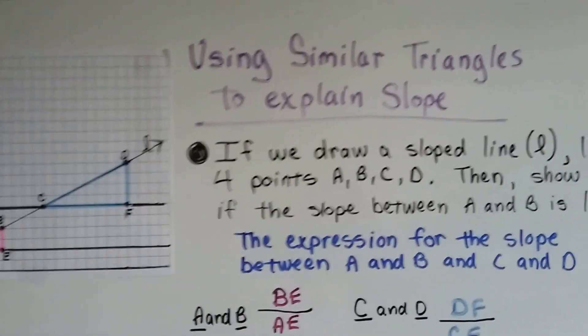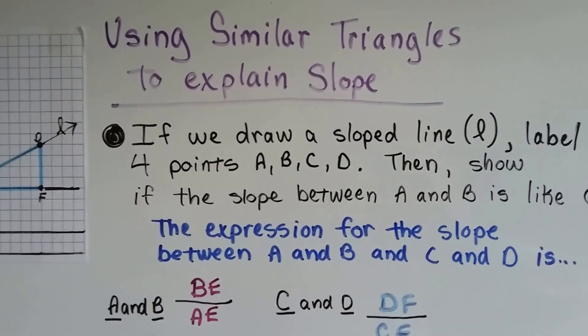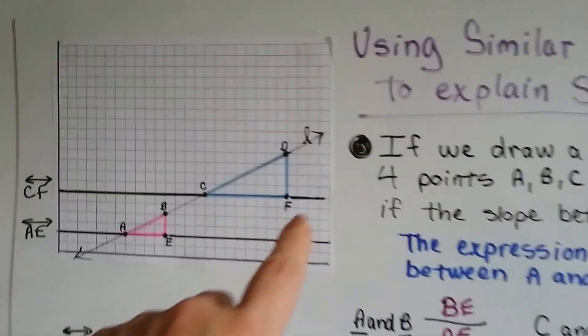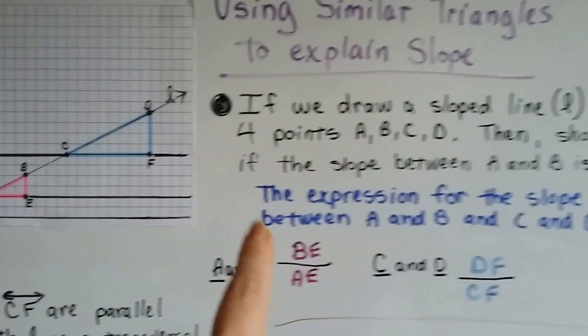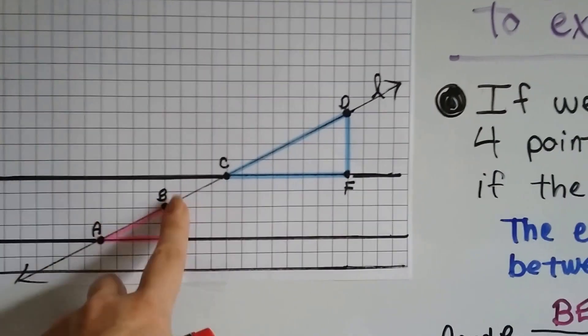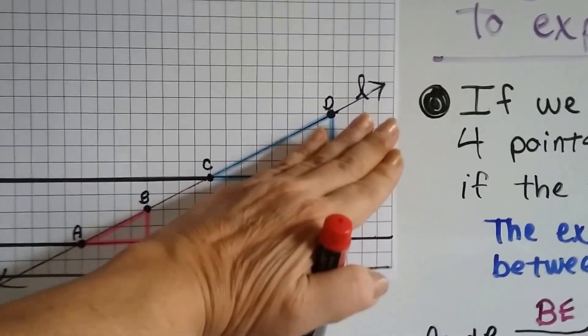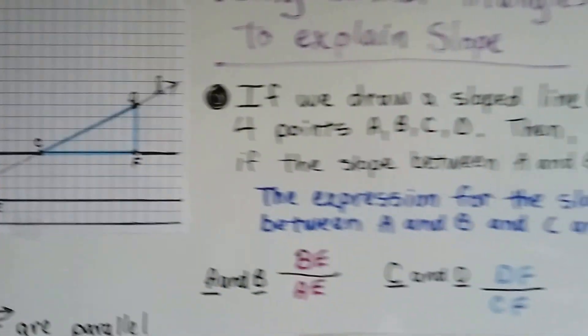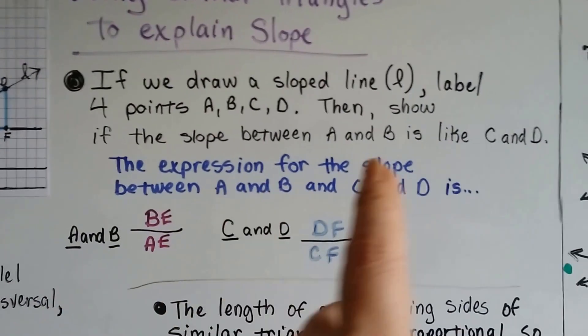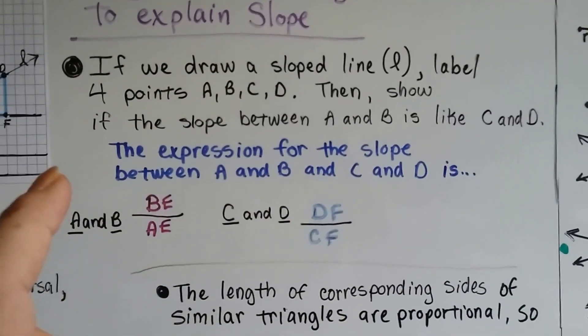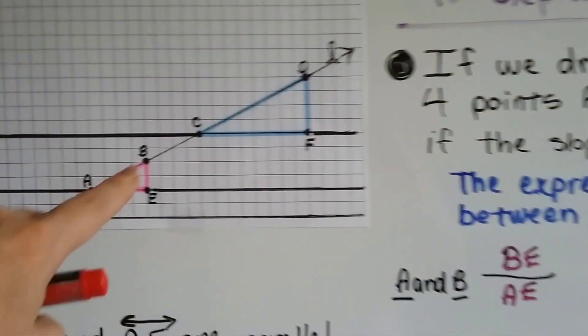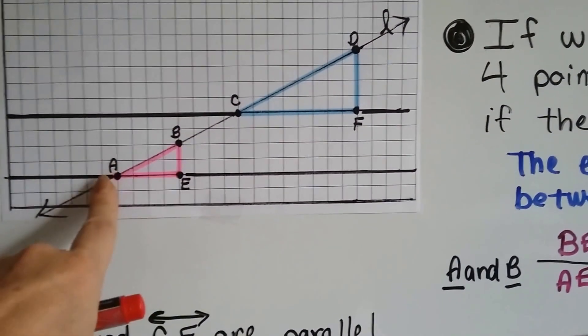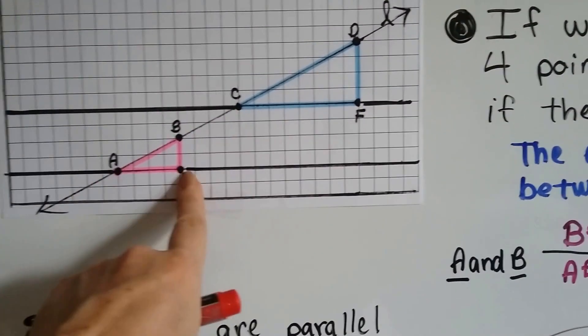I also want to show you this. This is using similar triangles to explain slope. So if we draw a sloped line L, that's going to be this one right here coming all the way down this way. And we label 4 points ABCD anywhere on the line. So far we've just got this line with 4 points on it. Then we show if the slope between A and B is just like the slope between C and D. So the expression for the slope between A and B would be BE over AE. That's the rise and that's the run. And for C and D, it would be DF over CF, the rise over the run.